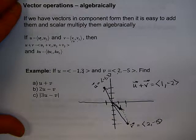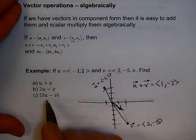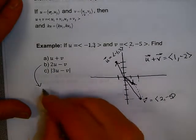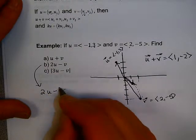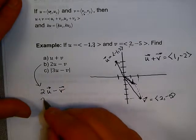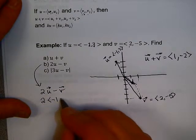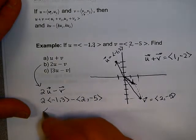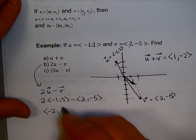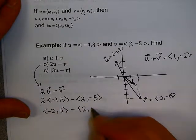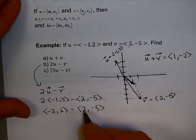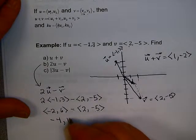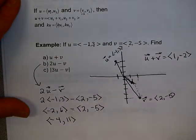For 2u minus v, it's easy to do algebraically. Two times u is ⟨−2, 6⟩. Then 2u minus v gives two minus two = −4, and six minus negative five = eleven, giving ⟨−4, 11⟩. For the magnitude of 3u minus v: three times u is ⟨−3, 9⟩, then subtracting v = ⟨2, −5⟩ gives ⟨−5, 14⟩. The magnitude is the square root of negative five squared plus fourteen squared.